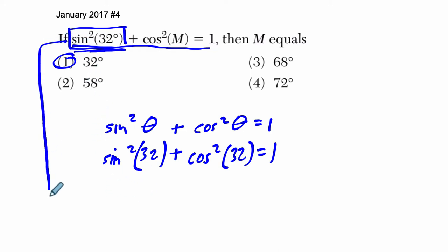So we're going to solve this now assuming we don't know this fact. So the cosine squared of M is going to equal what? 1 minus this whole thing right here, the sine squared of 32 degrees.